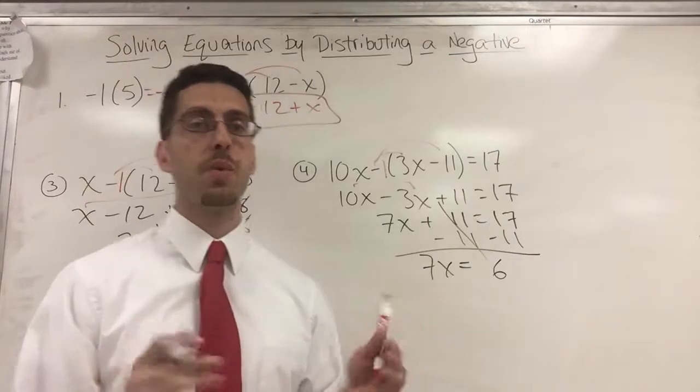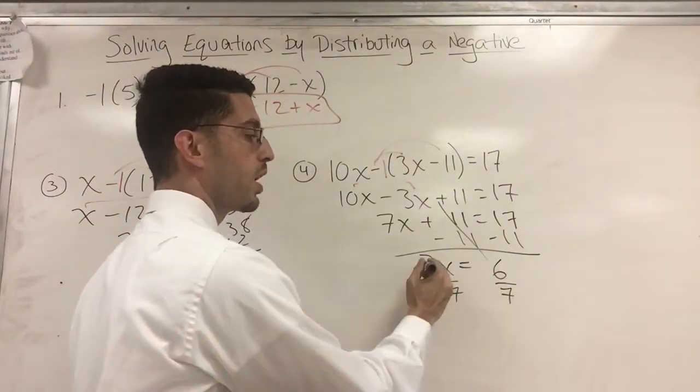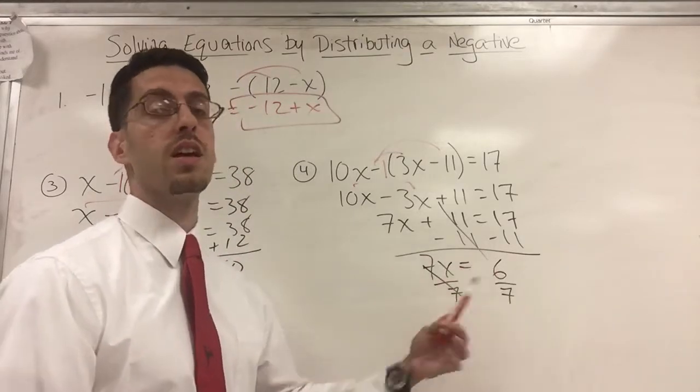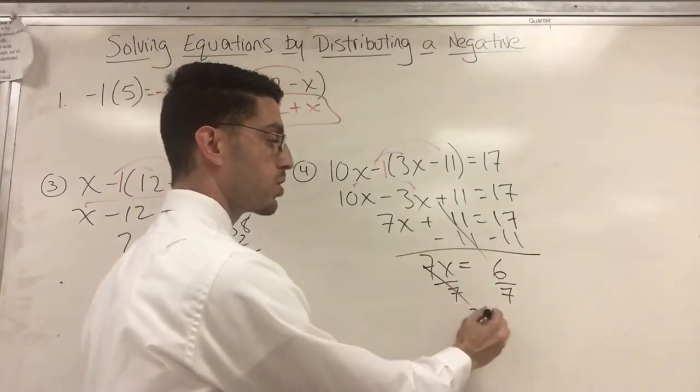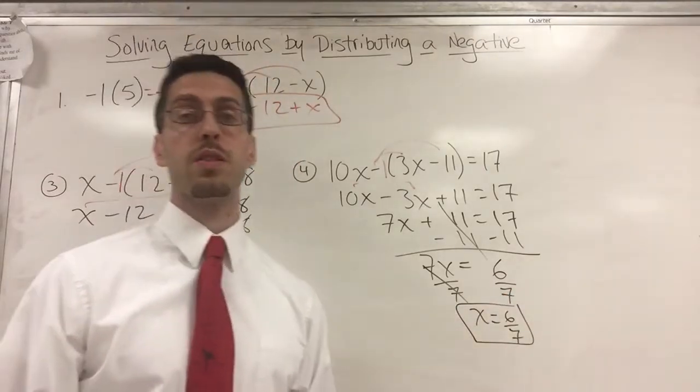Oh no. A fraction's coming. A decimal. I'm scared. Doesn't matter. So I'm going to divide by the coefficient, and whatever I see is my answer. So write what you see. I see 6 over 7. I write 6 over 7.